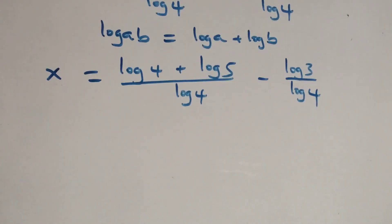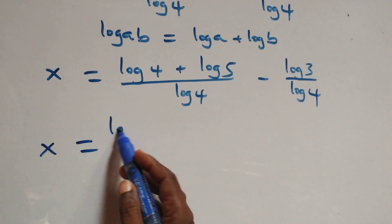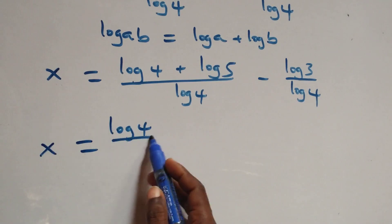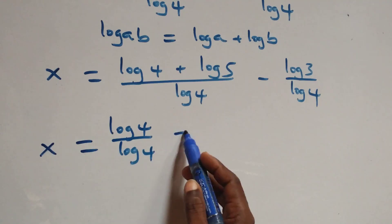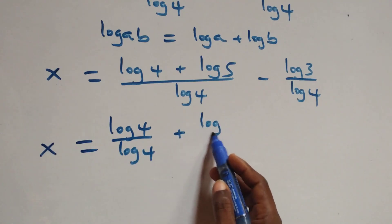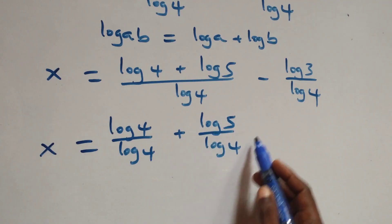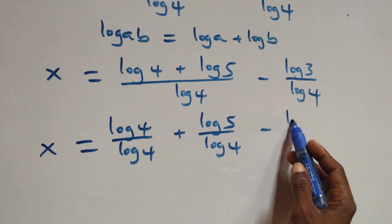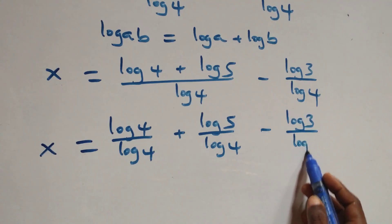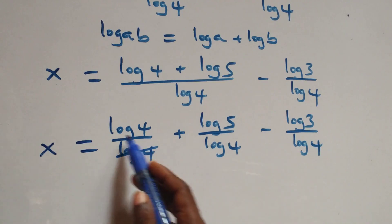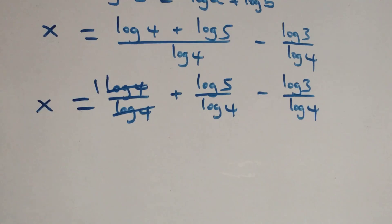We separate into two fractions: x equals to log 4 over log 4 plus log 5 over log 4 minus log 3 over log 4. Here log 4 over log 4 cancels to give 1, which implies x equals to 1 plus log 5 over log 4 minus log 3 over log 4.